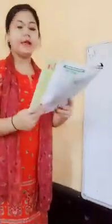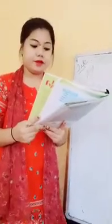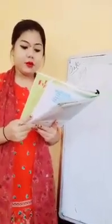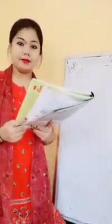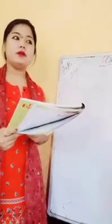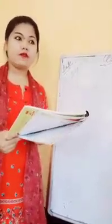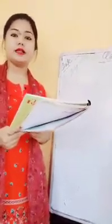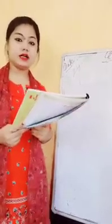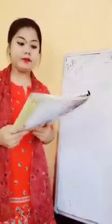Animals are useful to us in many different ways. We get many things from animals. From cow, we get milk. From hen, we get eggs. From ducks, we get eggs.